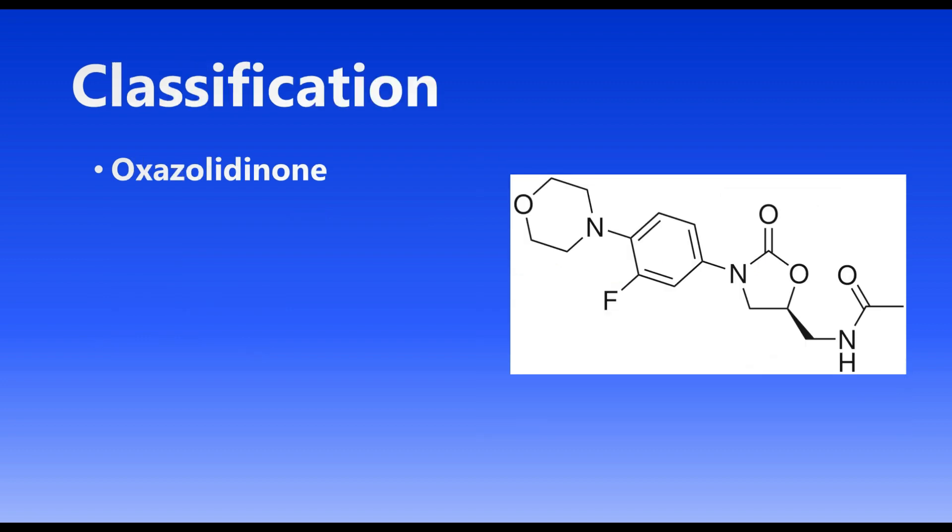Starting off with the classification, Linazolid is classified as an oxazolidinone. Big word, not very high yield for USMLE or Comlex, but the reason it's named this is because it contains a nitrogen and oxygen in a five-membered ring. This is where it gets its classification. There are other examples of oxazolidinones such as posazolid, tedazolid - most of them ending with zolid. There is also cycloserine, not very high yield for USMLE or Comlex, probably not going to see these in clinical practice, but there are other medications out there.